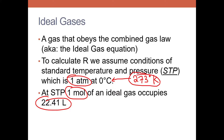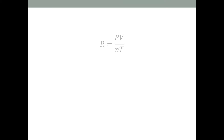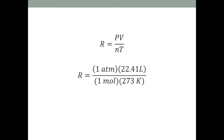We're going to use those STP values to calculate the gas constant. Taking all the values at STP that we know — one atmosphere, 273 degrees Kelvin, one mole occupying 22.41 liters — we calculate everything and get an R value of 0.082057 with units of liter·atmosphere per mole·kelvin.